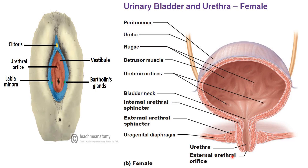Here, you can see the external urethral orifice, which is surrounded by the external urethral sphincter on either side of the urogenital diaphragm. The external urethral sphincter lies on either side and surrounds the female urethra in its distal one-third. It starts from the bladder neck, where it is surrounded by the internal urethral sphincter.